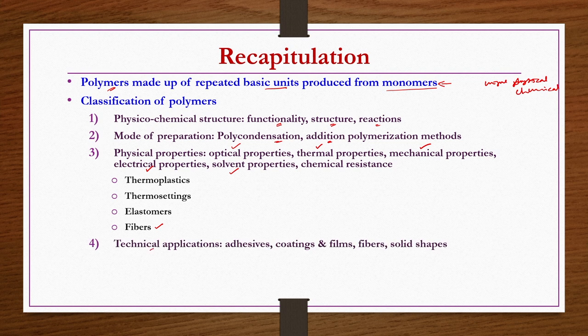Based on technical applications, you can classify polymers where you can have adhesives, coatings and films, fibers and solid shapes—different types of classifications are possible. These are common bases for classification, though they provide a certain kind of grouping rather than an exact classification system.